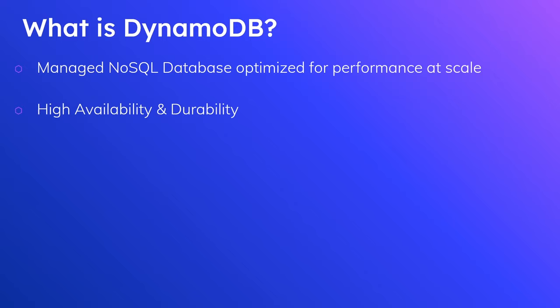It also has high availability and durability. Availability means the amount of time that it is up. DynamoDB has a 99.999% guaranteed uptime — that's the figure advertised on their SLA page. That translates to less than five minutes of yearly downtime or less than 26 seconds of monthly downtime. Being a managed service means that a lot of these failures are completely transparent to you. Even though some hardware can be failing behind the scenes, you won't necessarily see any performance degradation. There's a whole system maintaining your database to ensure it's always available.